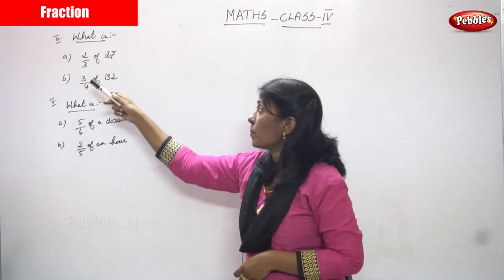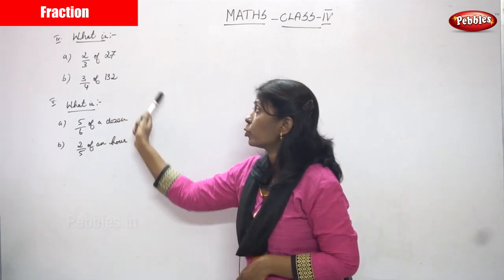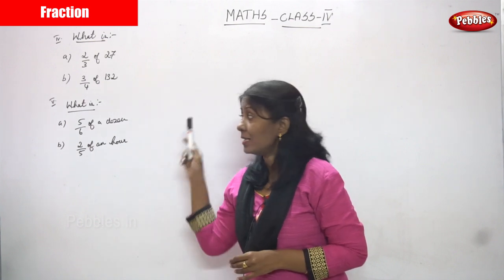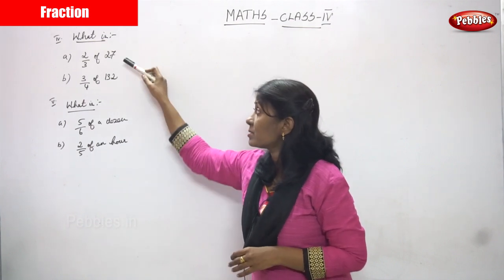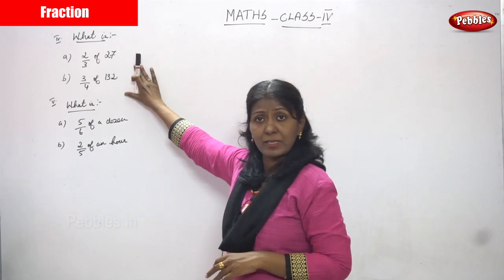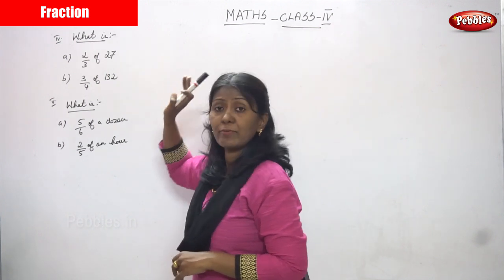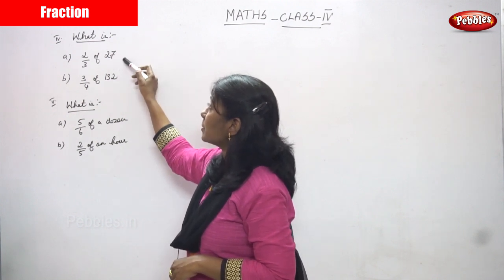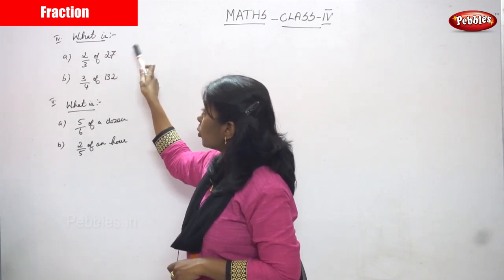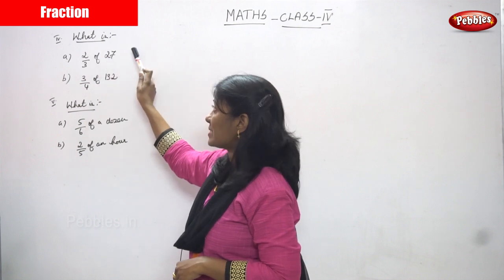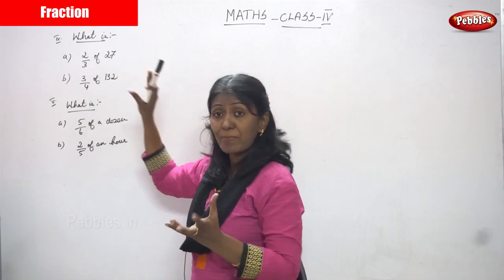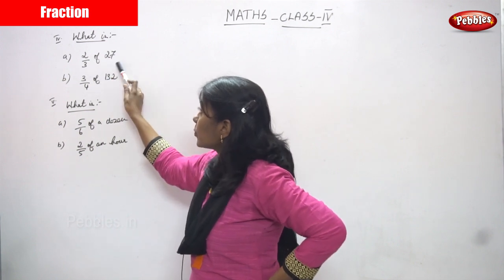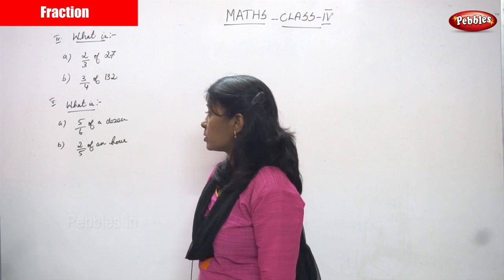Now we are going to see what is 2 by 3 of 27 and 3 by 4 of 132. You have to find out the answer for this question. In this particular subdivision they are given only the number — 2 by 3 of 27. 27 is a whole number, so how much part you can find out is the thing. So 2 by 3 of 27 and 3 by 4 of 132.